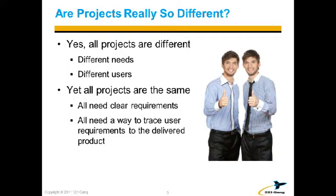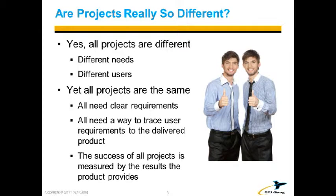And we're still struggling a little bit with getting them. Every project needs a way to trace the user requirements to the delivered products so we can make sure that we didn't miss any features, we didn't add any extra features. And the last thing that I think is really important: the success of every project is measured by the results it provides to the end users. We may think our project is a huge success, but if nobody buys the product or nobody uses it, then we have to go back and say, did we really do such a great job? How did we miss the boat on this particular project?